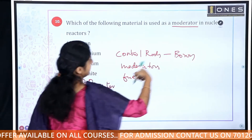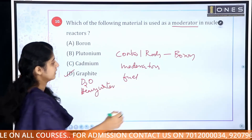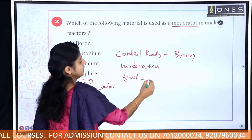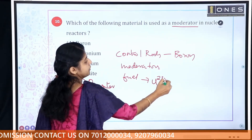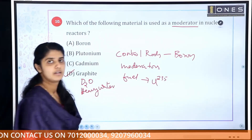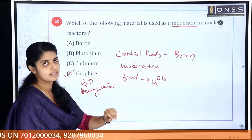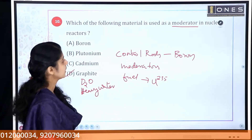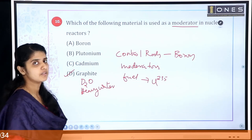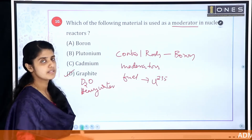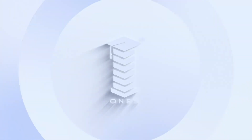Examples of control rod materials are boron and cadmium. For fuel, the main material is uranium-235, which is the primary cost driver. Enriched uranium fuel includes uranium-235 and uranium-237/238.